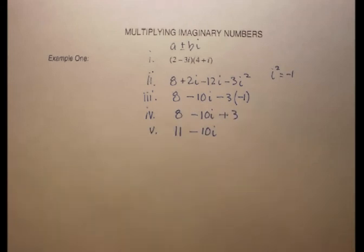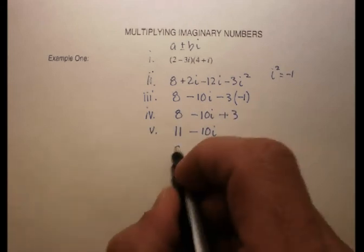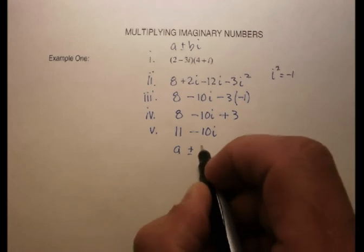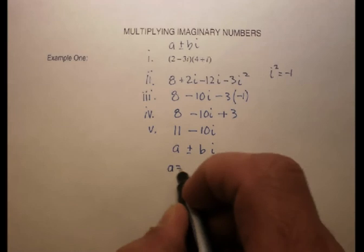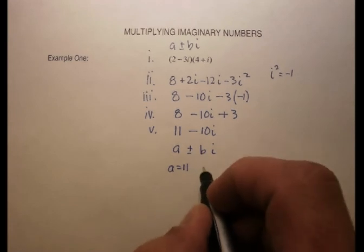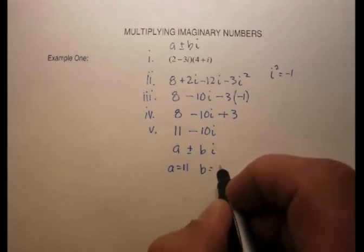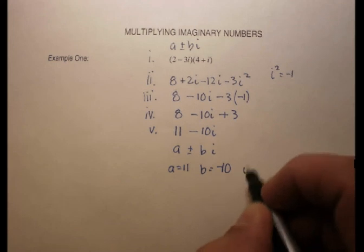And there's my answer. And it's written, you'll notice, in A plus or minus BI form. So the A is the real number. In this case, the B is going to be a negative 10, and then there's my I.